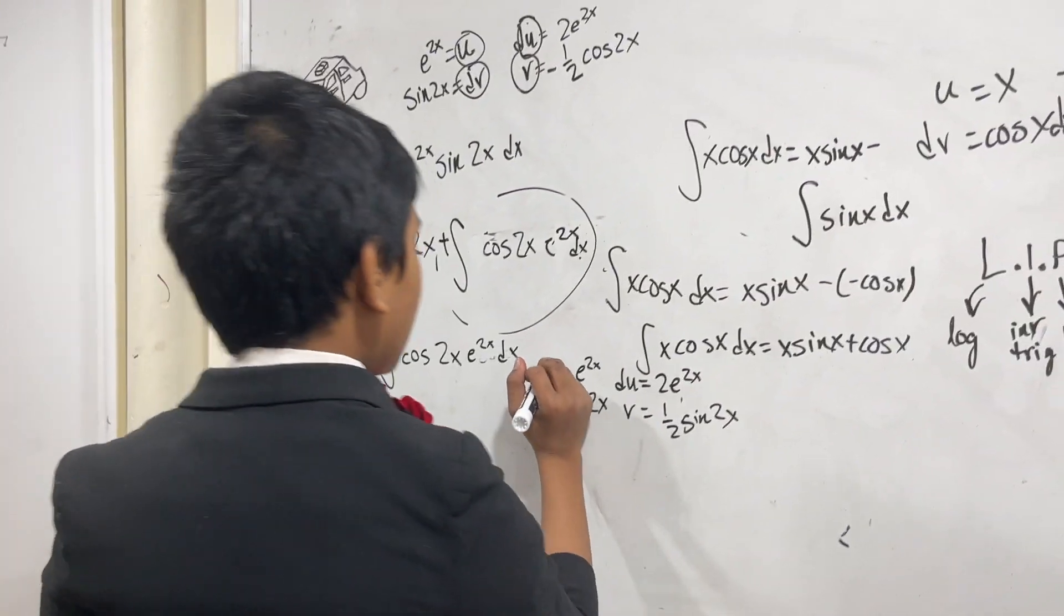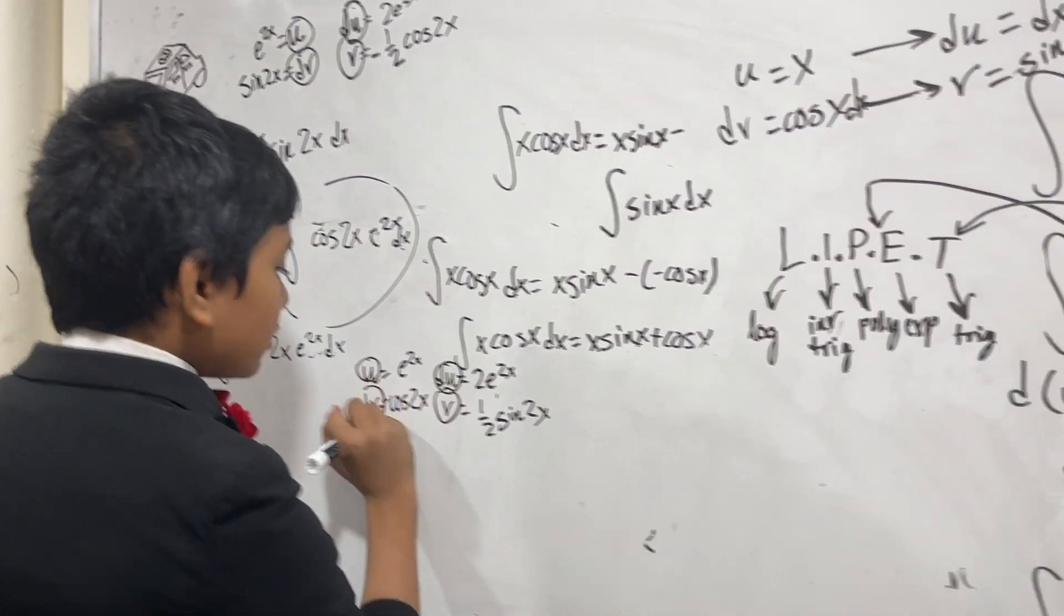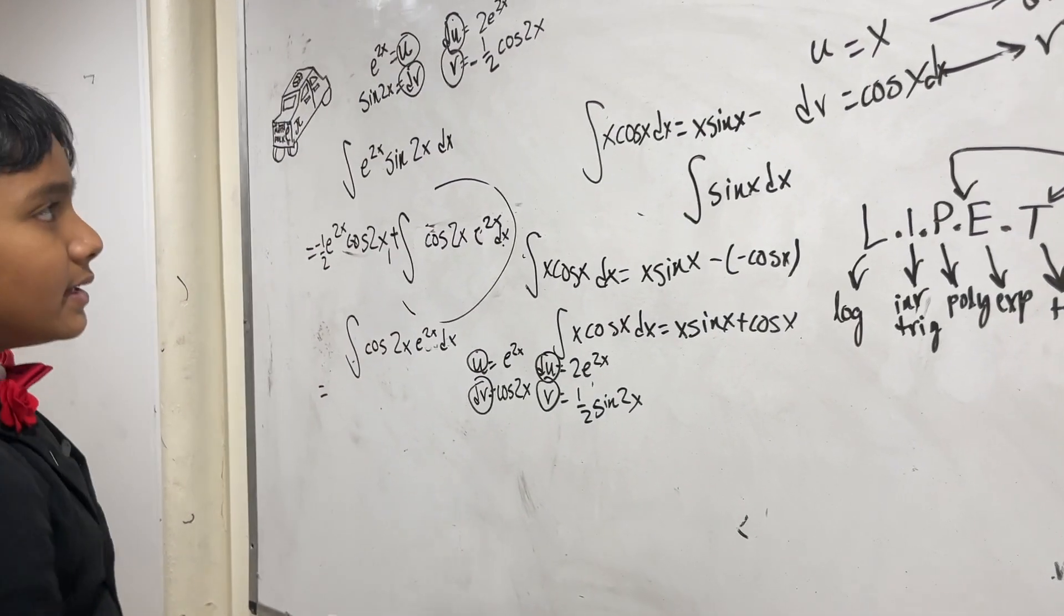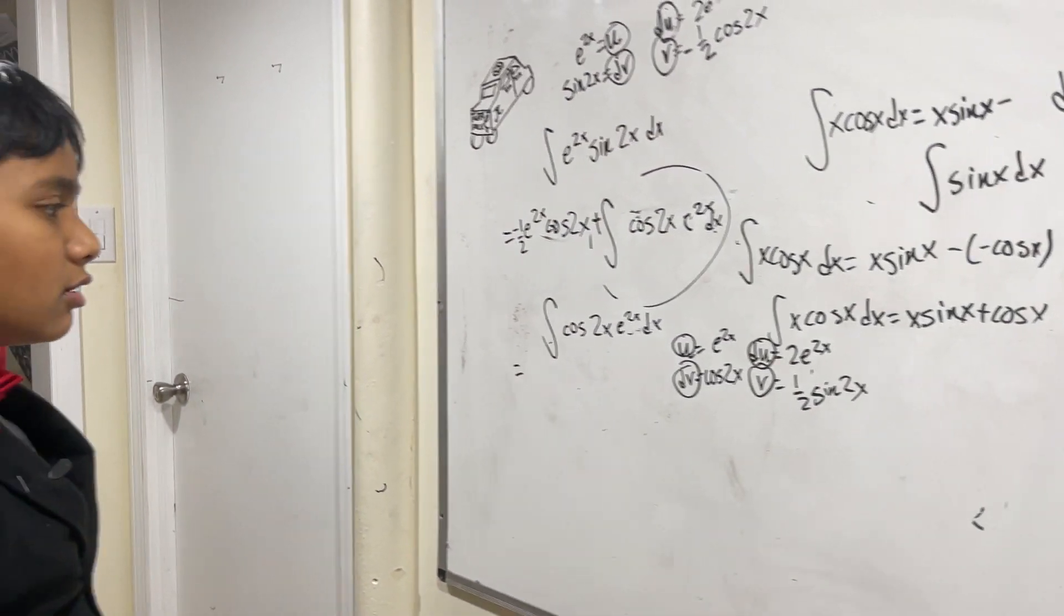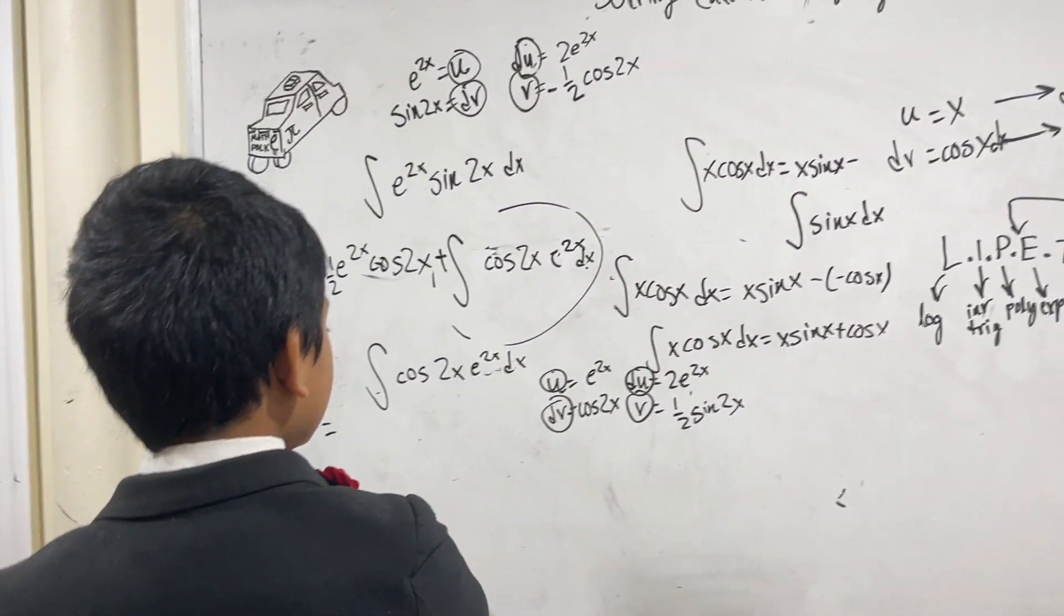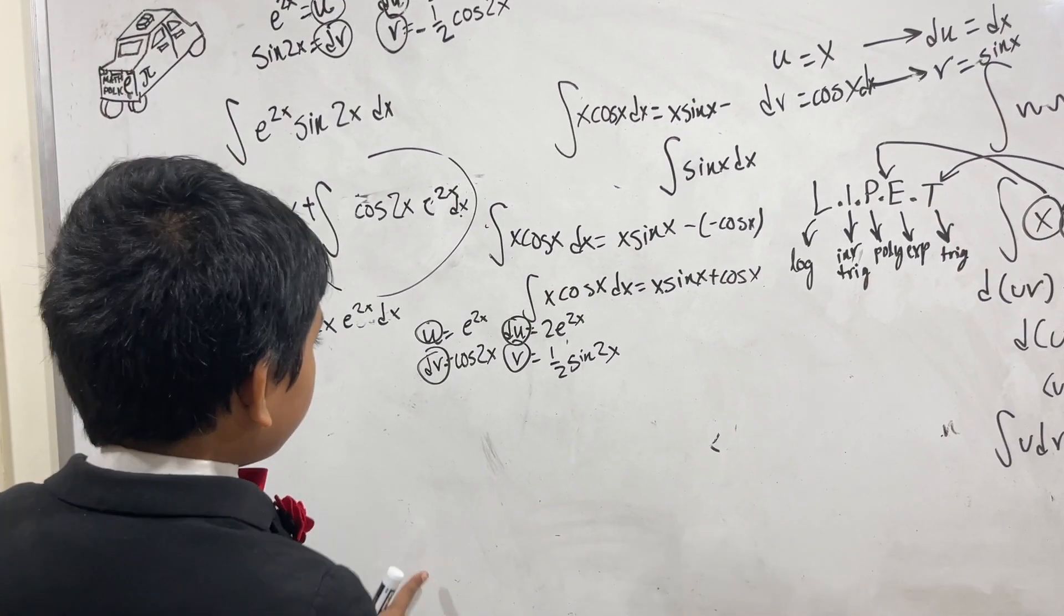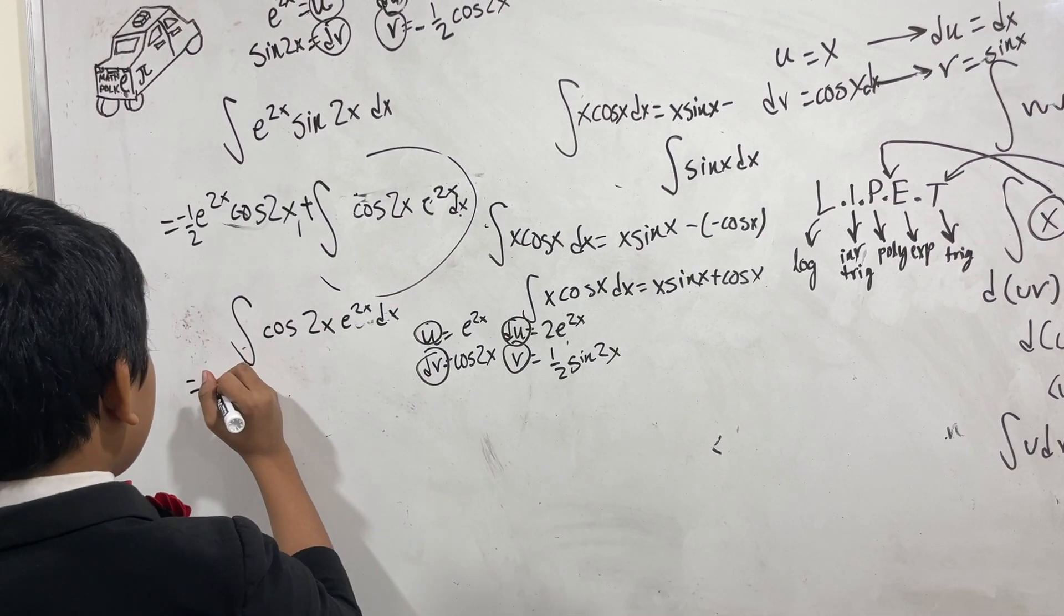We've got our u, our v, our du, and our dv. You might notice that these almost loop around. So what can we do about that? Well let's see, we are going to use that to our advantage, but later.